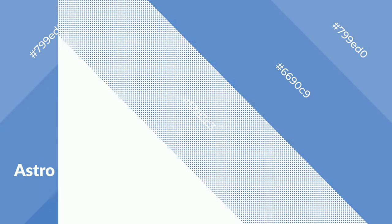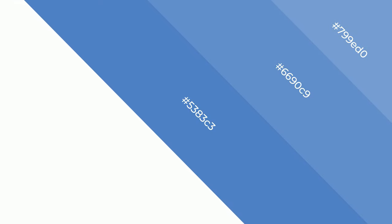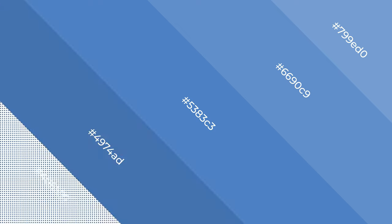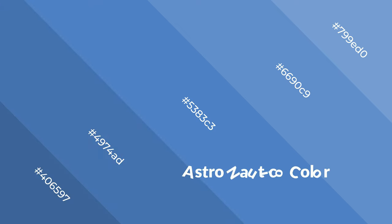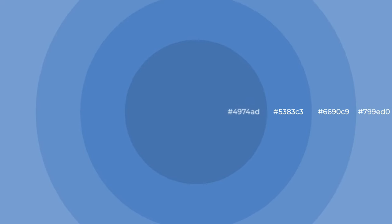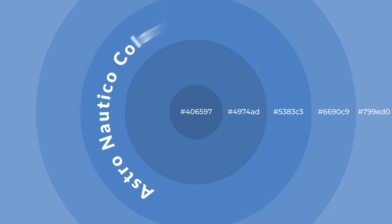Cool colors are like water, ice, sky, grass, soft, and snow. You can see them used in baby products.